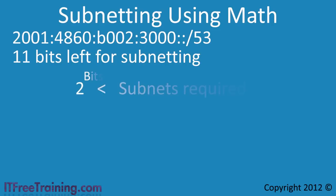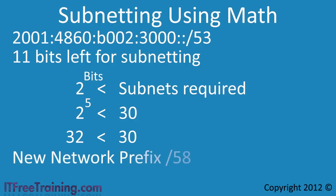To do this work out 2 to the power of the number of bits that will give us a value over 30. In this case 2 to the power of 5 results in 32. This means 5 bits will support 32 networks. So I will use 5 bits of the subnet ID for the new network prefix. This makes the network prefix for the new subnets 58.